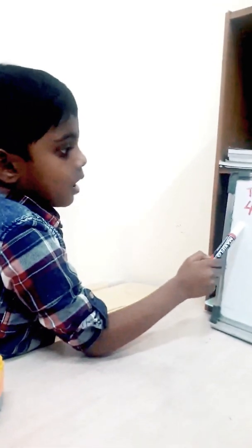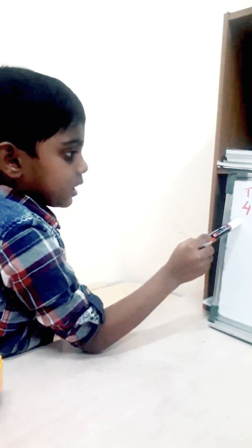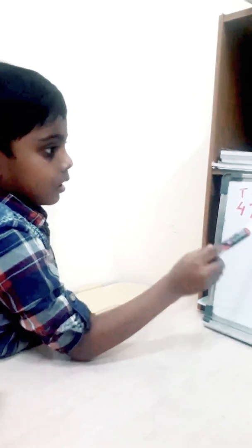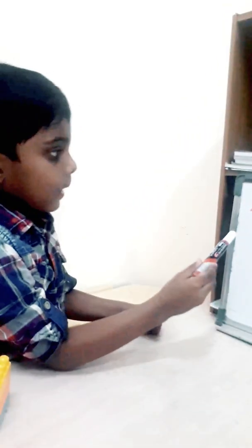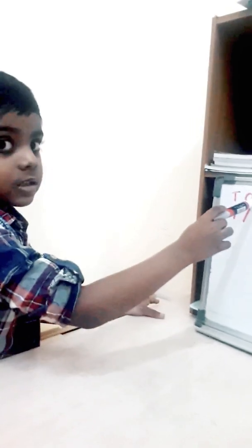The value of the four is forty. The value of seven here is seven.